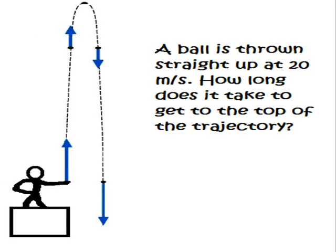Welcome to another tutorial by Longhorn Physics. In this tutorial, we're going to talk about objects being thrown straight up and take on a problem like this. A ball is thrown straight up at 20 meters per second. How long does it take to get to the top of the trajectory, which is the path of the projectile?